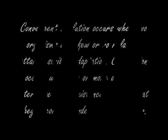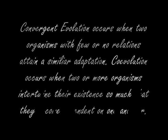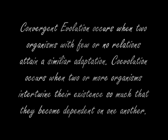One can clearly see the differences between these two types of evolution. Convergent evolution occurs when two organisms with few or no relations at all attain a similar adaptation. Co-evolution is when two or more organisms intertwine their existence so much that they are almost totally dependent on one another. Thank you.